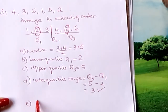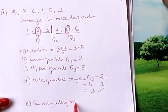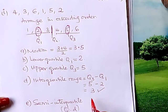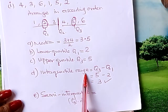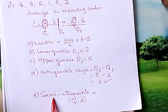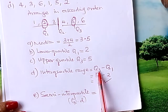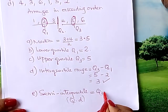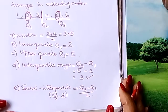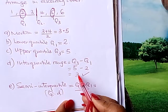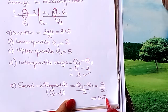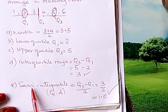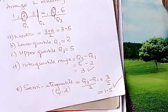We go to the last part: the semi-interquartile range, which is also referred to as quartile deviation. We get it by taking the interquartile range divided by 2, or multiplied by a half. Semi means a half. So it is Q3 minus Q1 divided by 2. The interquartile range is 3 divided by 2, giving 1.5. Remember, the other name is quartile deviation.